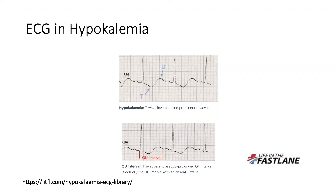This is an example of the EKG. In the first diagram, you see the prominent U wave and the ST segment inversion. This can sometimes falsely give the impression of a prolonged QT interval — it's not actually prolonged; it's because of the U wave. You actually have a QU interval. This is called pseudo-prolonged QT interval, as you can see in the second diagram.